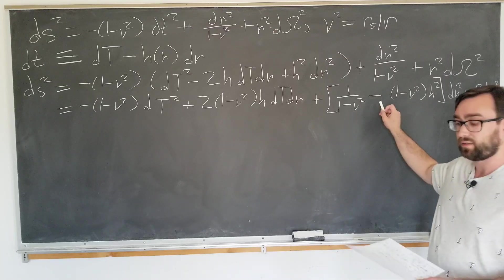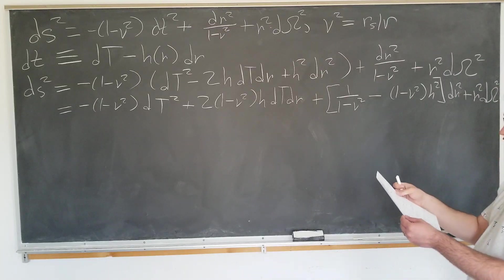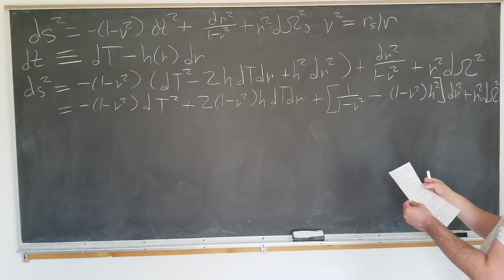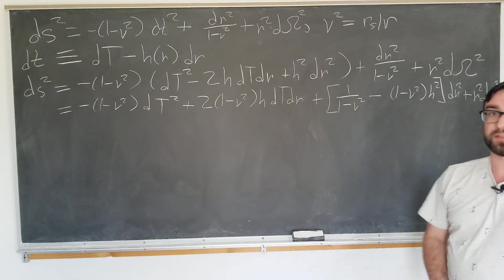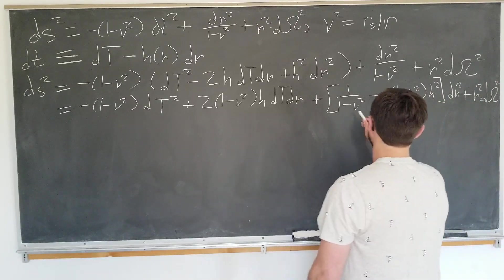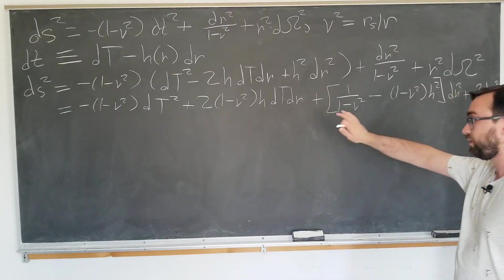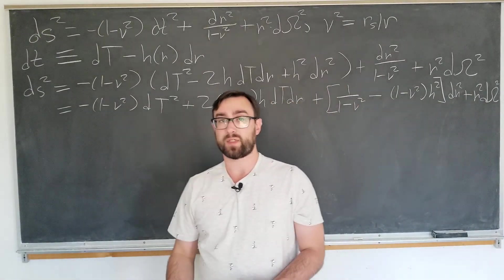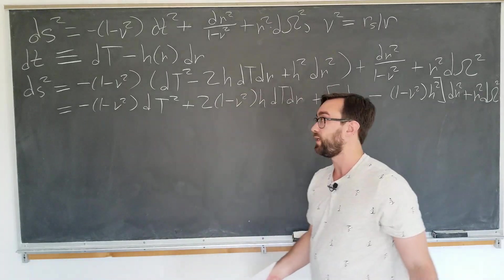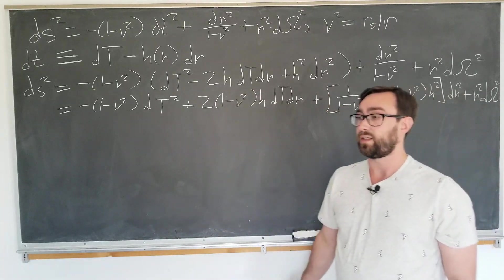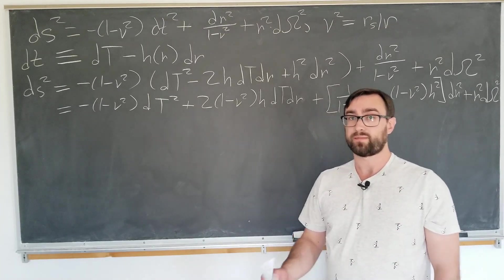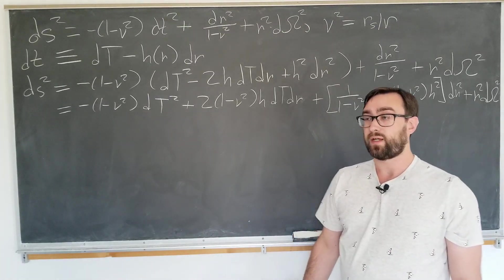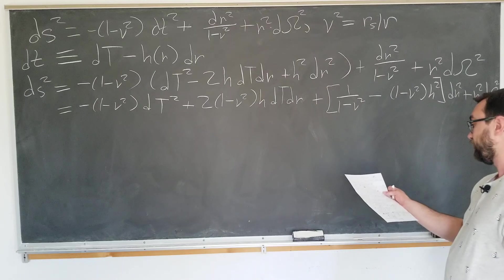Now what we want to do is make sure I got this right first. Yeah, that should be right. So how we're going to determine h of r is we're going to set the dr squared coefficient equal to 1. Why do we do this? Because we know the answer will simplify. If we do this, you don't have to do this to get the explicit coordinate transformation without the singular behavior, but it just ends up being nicer.